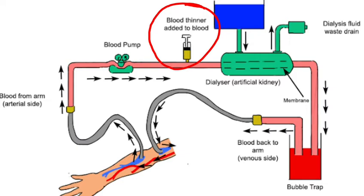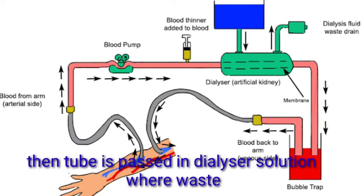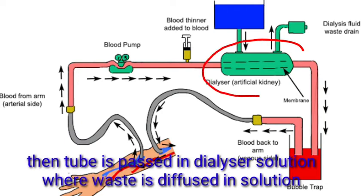Heparin anti-coagulant added kiya jata hai to prevent clotting. Then cellulose ya cellophane tube ko dialyser se attach kiya jata hai. Dialyser mein ek solution hota hai jiska composition aapki urine ke jaisa hi hota hai. Inside it, jo nitrogenous waste hote hain woh diffuse ho jate hain — due to concentration gradient waste material diffuse hokar dialyser fluid mein aa jate hain.